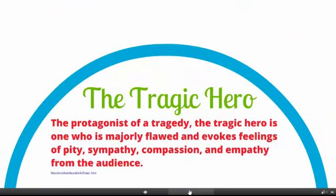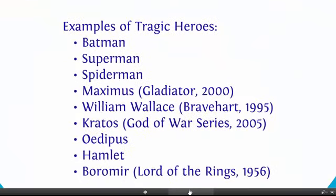The tragic hero is a protagonist of a tragedy. The tragic hero is one who is flawed, evokes feelings of pity, sympathy, compassion, and empathy — you feel for him. Some examples are Batman, Superman, Oedipus, Hamlet, and Boromir from Lord of the Rings. These are heroes who are not only heroic, but because there's something so flawed about them, there's something that makes you feel for them so much more than you do for just a typical hero.